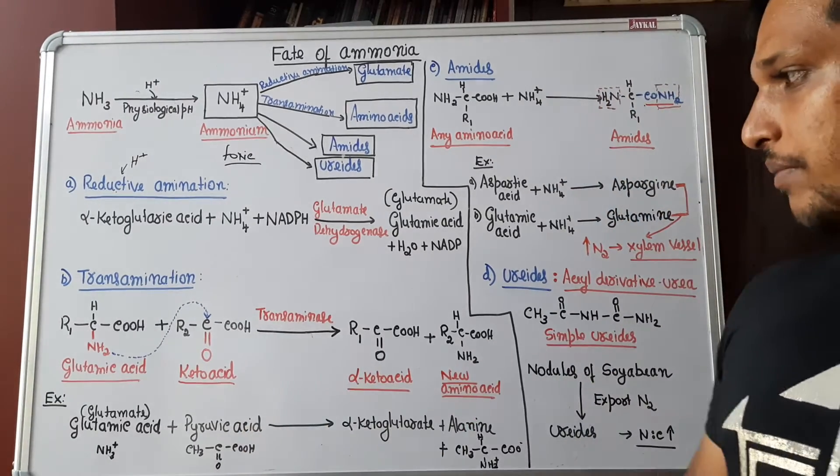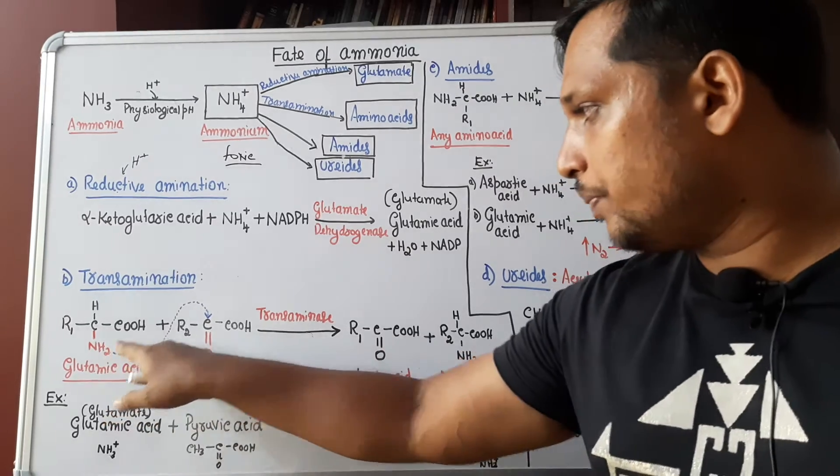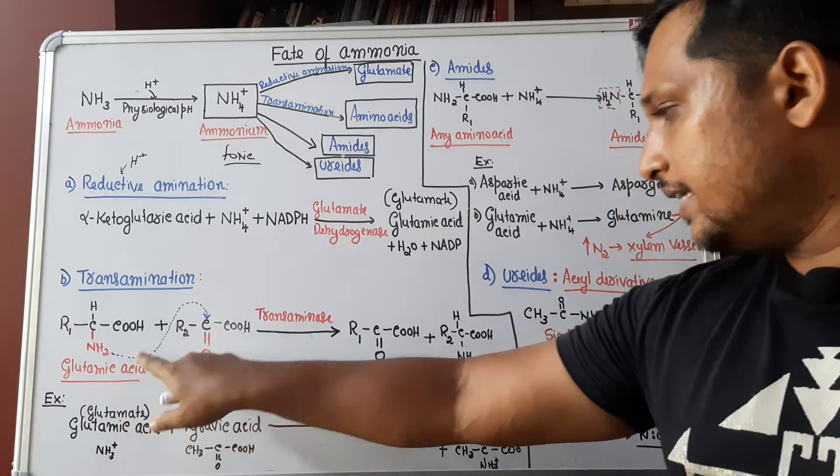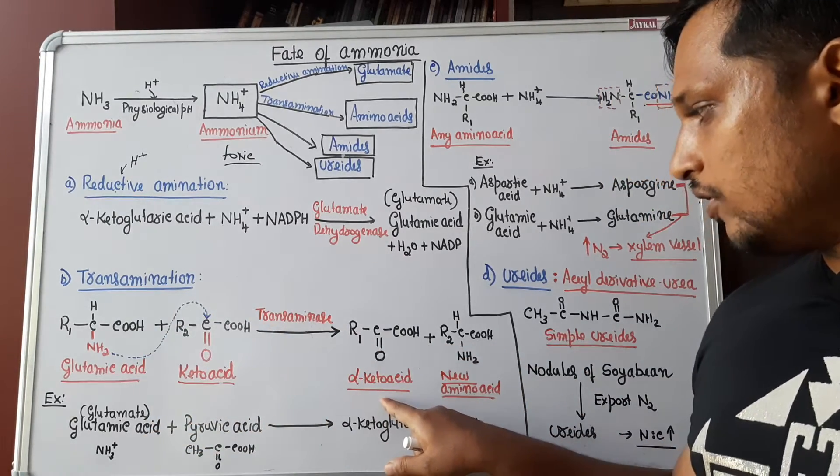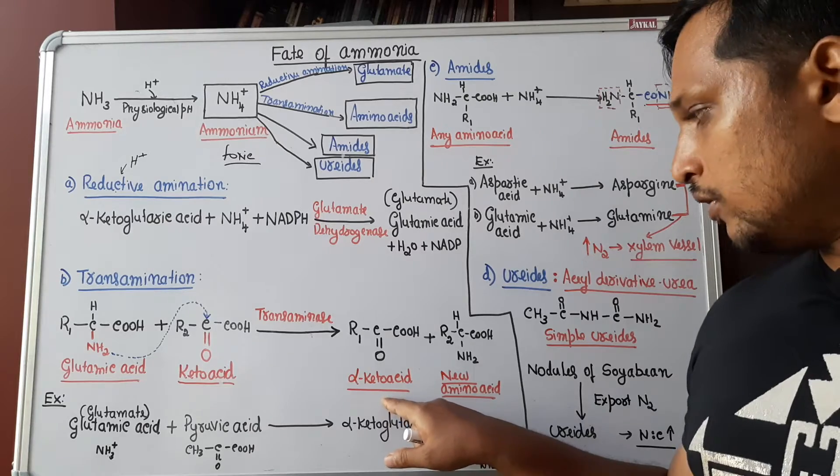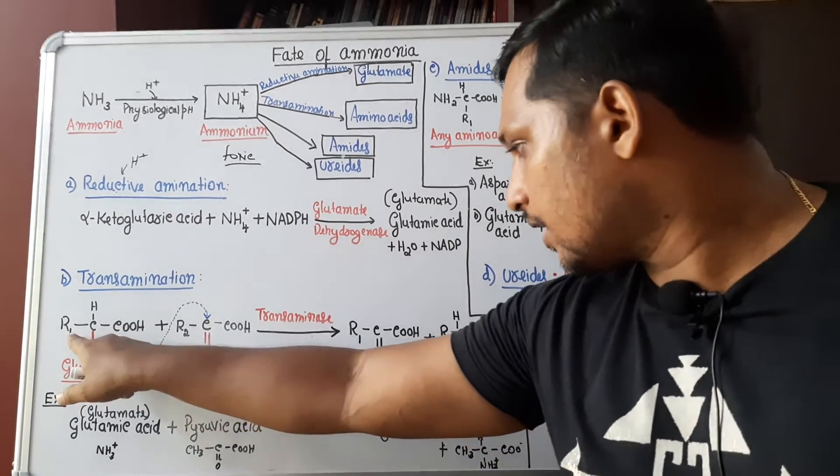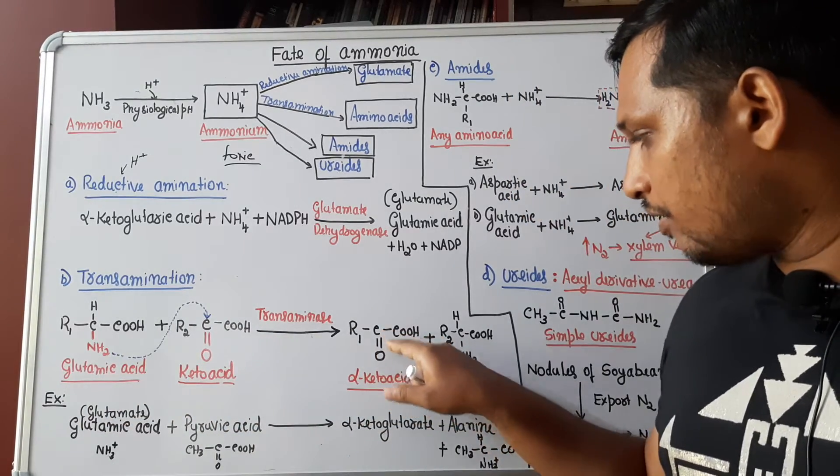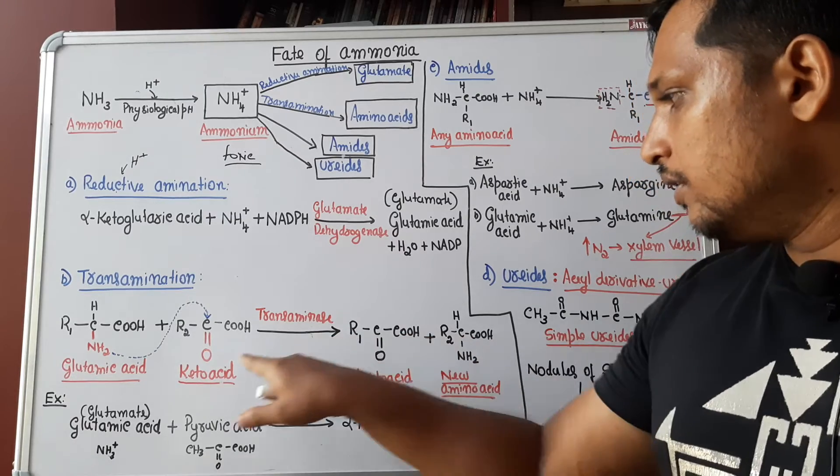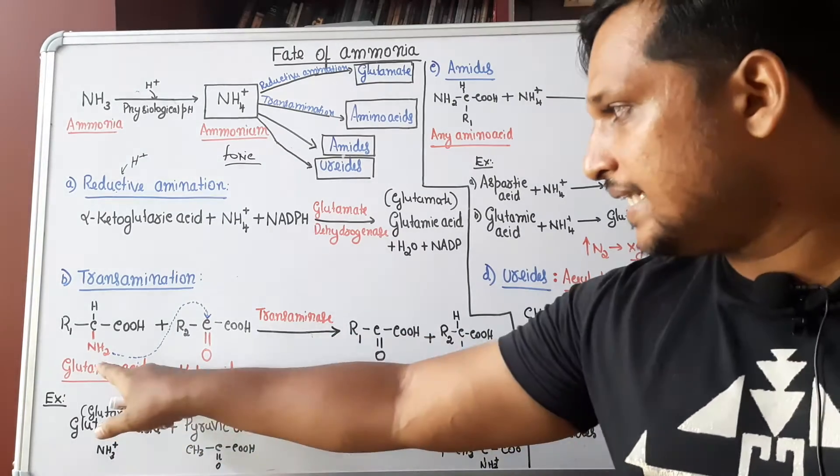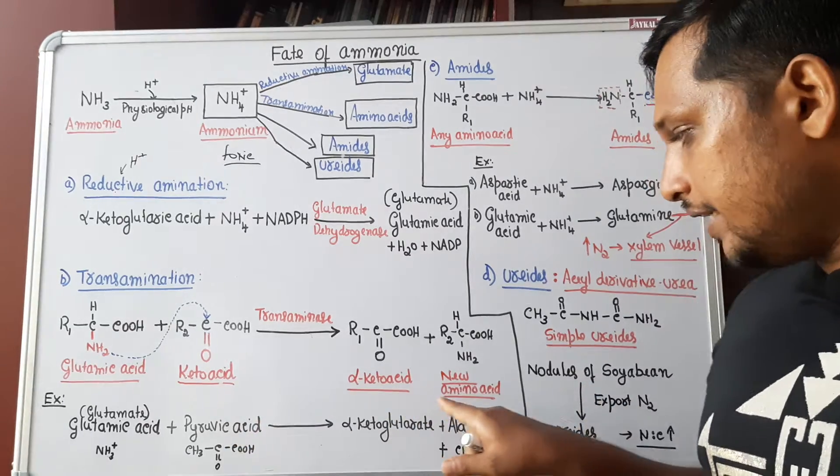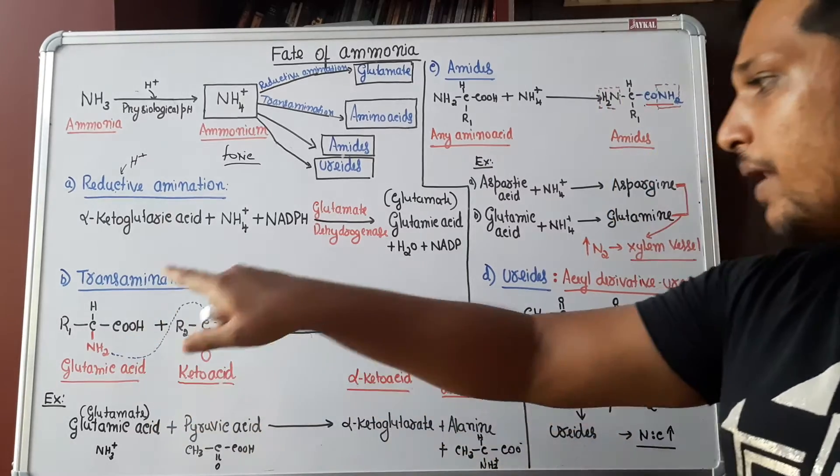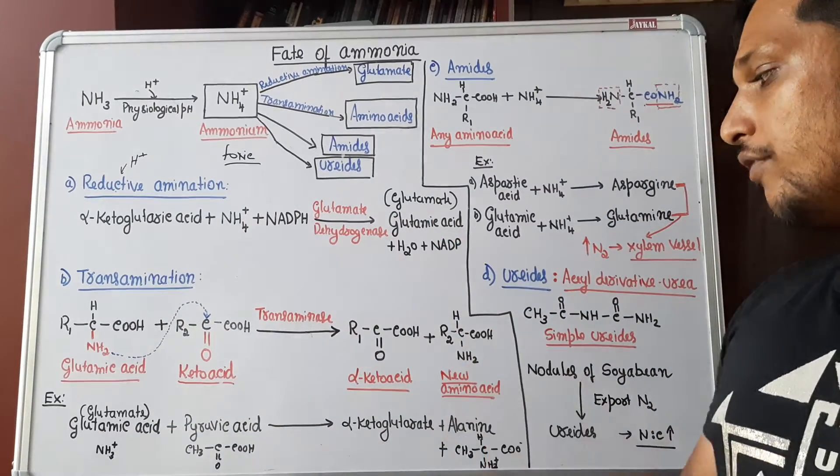When there is transamination, what happens? When amino group is transferred to the ketoacid, amino acid, glutamic acid which was there, it gets converted into alpha-keto acid which means R1 by losing NH2, there is formation of ketone group and COH is formed. Whereas, what will happen to ketoacid? By receiving amino group, ketoacid will get converted into a new amino acid. As I mentioned, from glutamic acid, plants will be preparing other amino acids required for them.